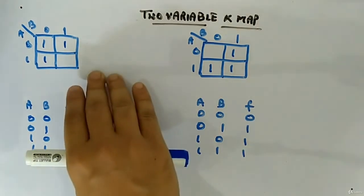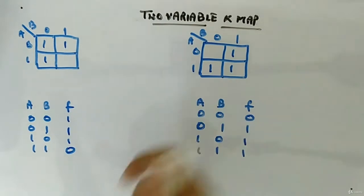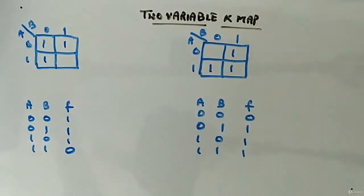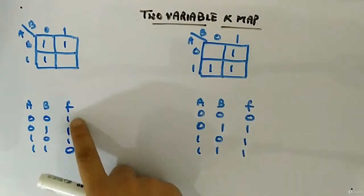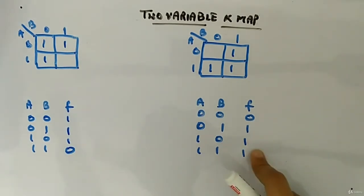Okay, now let's look at an example where we have more than one pair. So this is one example, this is one example. Here you can see we have three ones and one zero. Here also we have three ones and one zero, but the arrangement is slightly different.